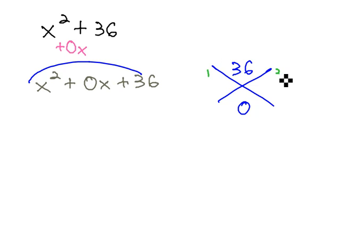1 times 36, 2 times 18, 3 times 12, 4 times 9, 6 times 6, all the combinations that could multiply to 36, none of them are going to add to 0.